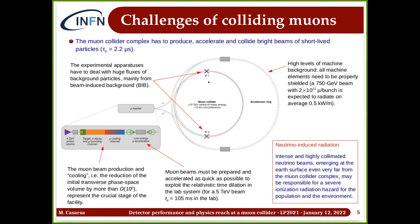The experimental apparatus are flooded with very high fluxes of background. Moreover, a muon collider represents a very intense source of highly collimated neutrino beams. While this offers synergy with neutrino physics, if not mitigated, these neutrino beams traveling far from the accelerator complex may interact with rocks when emerging at the surface, creating an ionization radiation hazard for the population and environment.